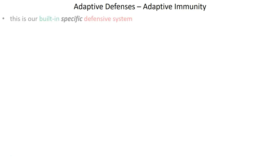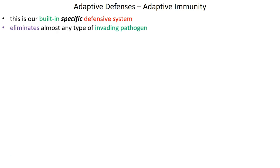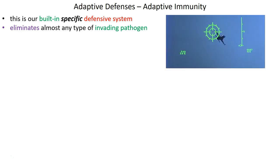Adaptive immunity is really all about adaptive defenses. This is our built-in specific defense system, and it's that specificity that really distinguishes adaptive immunity from innate immunity. The adaptive response can eliminate almost any type of invading pathogen, and it does it specifically. I like the analogy of homing a missile onto a foreign invader — that missile is locked onto a specific enemy target and finds its way to destroy it. Pathogens are identified specifically and attacked specifically so that everything else around them can be ignored.